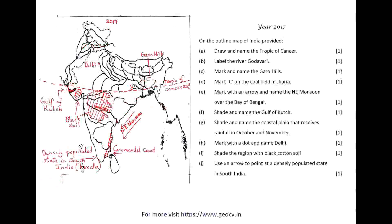Year 2017. On the outline map of India provided: A. Draw and number the Standard Meridian of India. B. Label the River Mahanadi. C. Mark and name Lake Chilka. D. Shade and name the Gulf of Mannar. E. Mark and name the Vindhya Mountains. F. Shade and name a sparsely populated region in western India. G. Shade a region with alluvial soil in south India. H. Mark and name Kolkata. I. Mark with arrows and name the Southwest Monsoon winds over the Bay of Bengal. J. Mark and name Mumbai High.